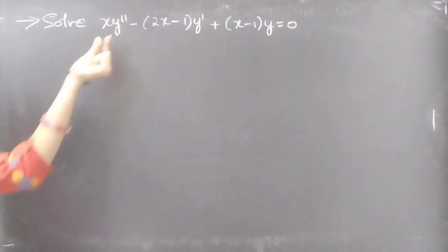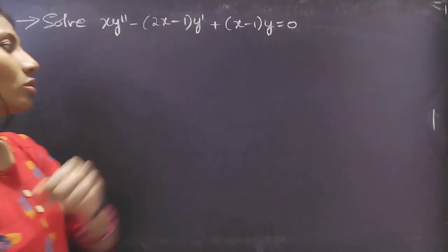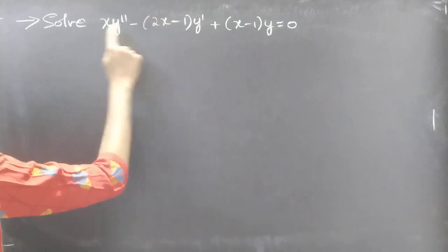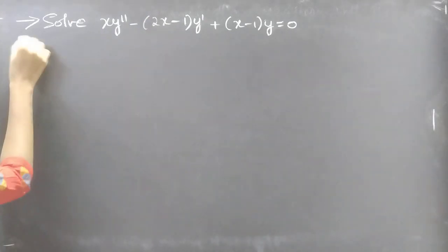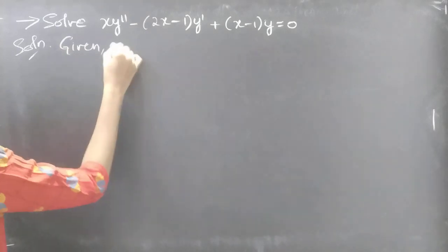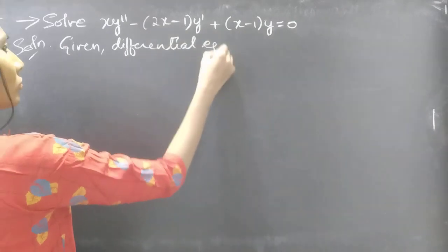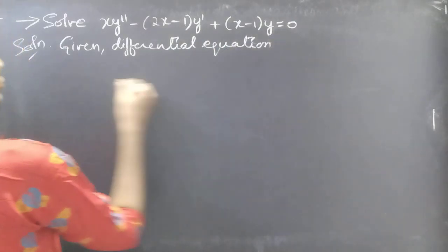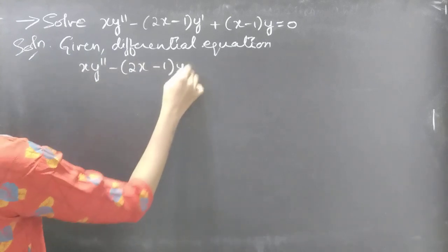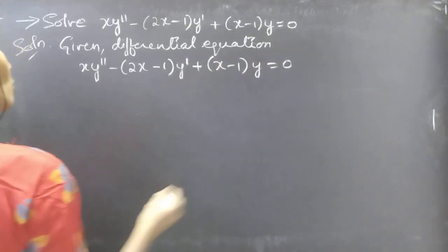Problem: Solve x·y'' − (2x−1)·y' + (x−1)·y = 0. This is a differential equation with variable coefficients.